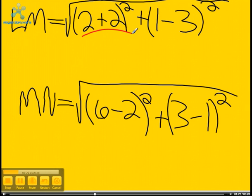Okay, so LM, that would be 4 squared, which would be 16, plus negative 2 squared, which would be 4, and then you add them together and it equals radical 20.